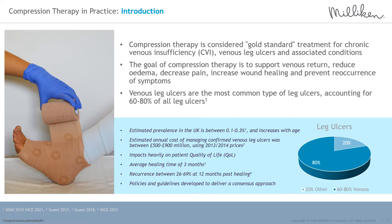Venous leg ulcers are a global healthcare challenge. The United Kingdom estimates prevalence between 0.1% and 0.3%; the United States approximately 1.69%, with similar rates in parts of Europe. Annual management costs in the UK are reported between £500 and £900 million. The USA estimates annual costs between £2.5 billion, with Germany reporting cost-to-treat at between €9,900 and €10,800.